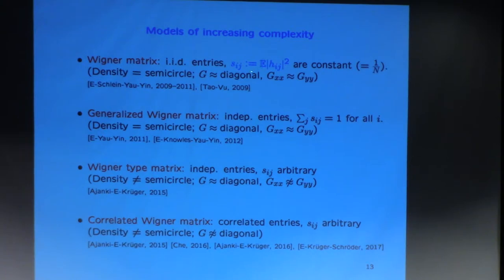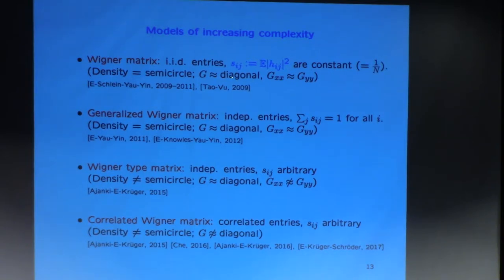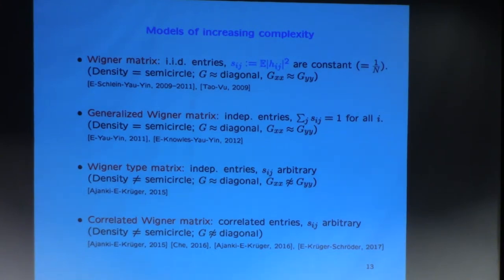The Wigner matrix is characterized by IID entries. The variance matrix S_{ij} is defined as the expectation of |H_{ij}|^2. In the Wigner case, the variance matrix is very simple — each matrix element is the same, just 1/n. The density is the semicircle, and the resolvent G is essentially diagonal: the off-diagonal elements are essentially zero, while the diagonal elements are all comparable and almost the same.